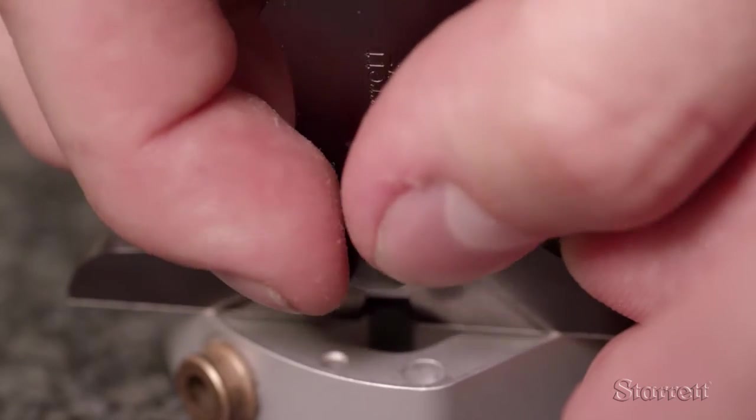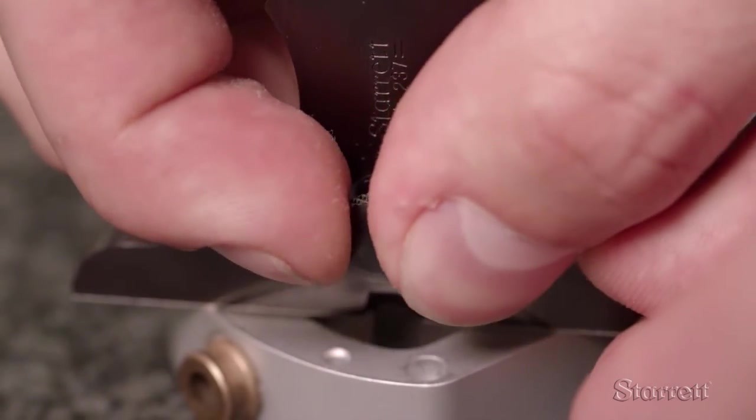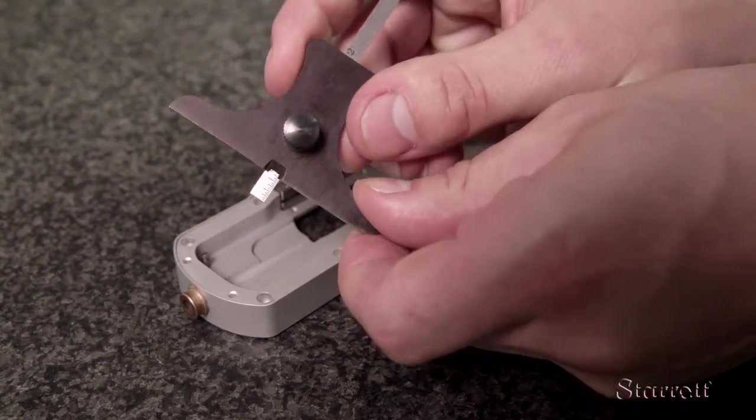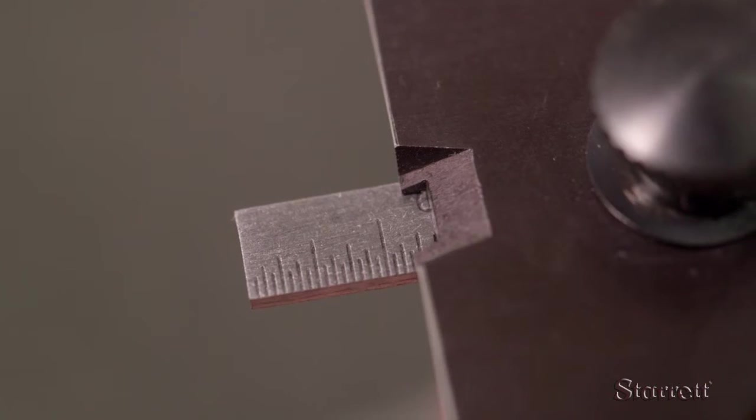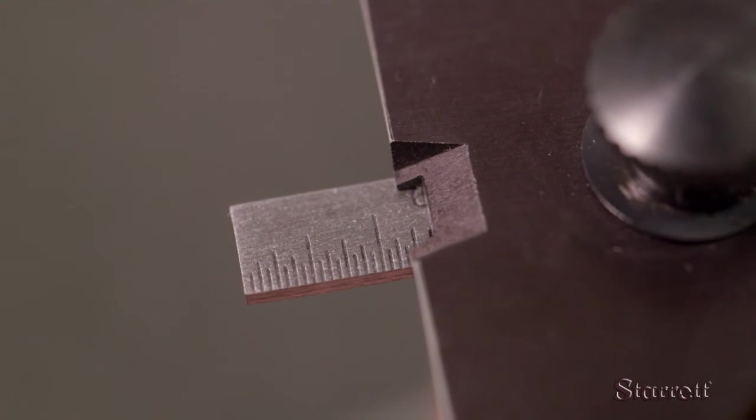Tighten the knurled nut and remove the 237 from the part. To read the measured depth, look at the slight cutout on one side of the gauge and read the value on the rule.